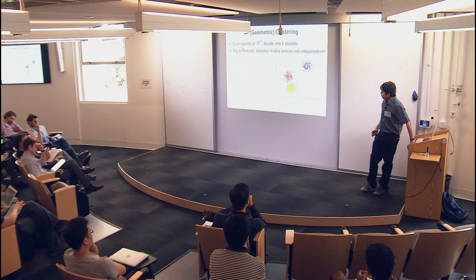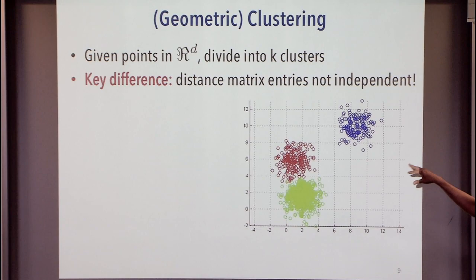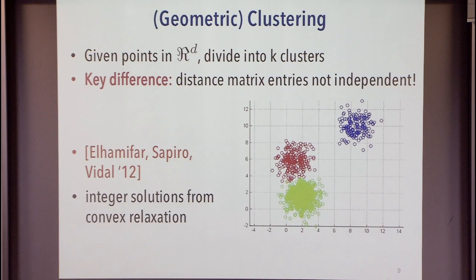We'll look at clustering problems. Given points in d-dimensional space, the goal is to divide into k clusters, where k is given. If you look at the distance matrix, even if you pick random points in space, the distances are not independent — there are inherent dependencies. There's been prior work on when relaxations of clustering objectives are integral. For example, one paper derived conditions under which the relaxation for k-median is integral.